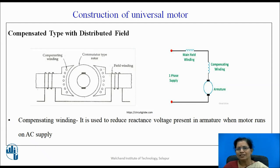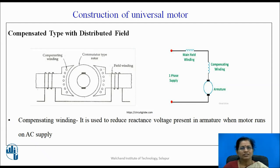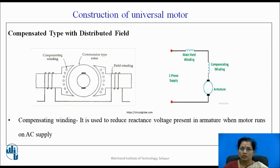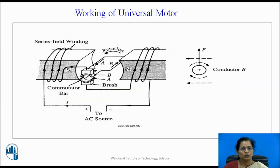In the second diagram, you can see the armature, main winding, and compensating winding are connected in series, and we can connect single phase AC supply or DC supply for that motor. That is why the name universal motor is given — because we can use this motor for AC and DC both.